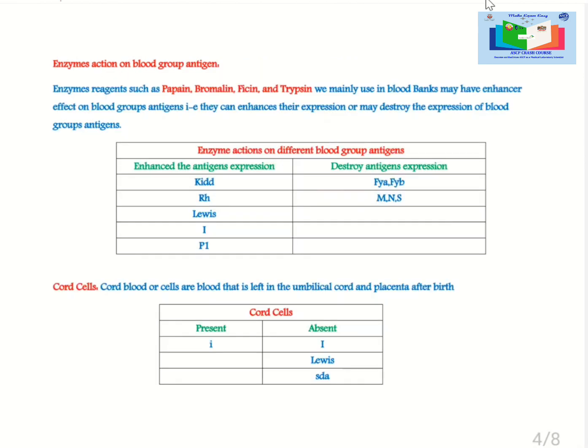Enzyme actions on blood group antigens. Enzyme reagents such as papain, bromelain, ficin and trypsin we mainly use in blood banks may have enhancer effect on blood group antigens. For example, they can enhance their expression or may destroy the expression of blood group antigens.